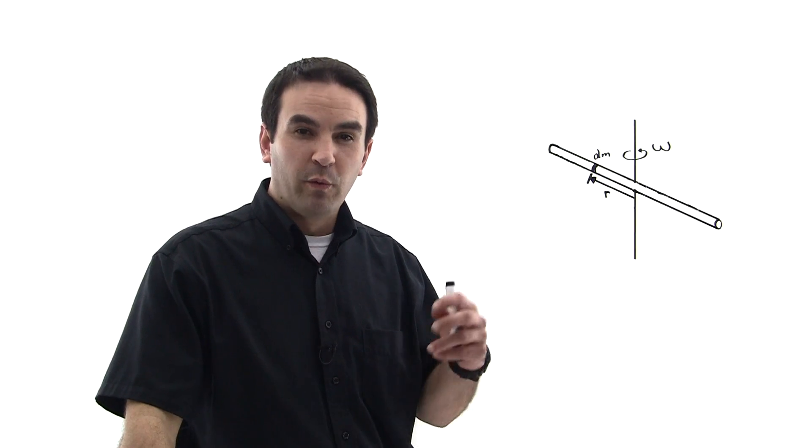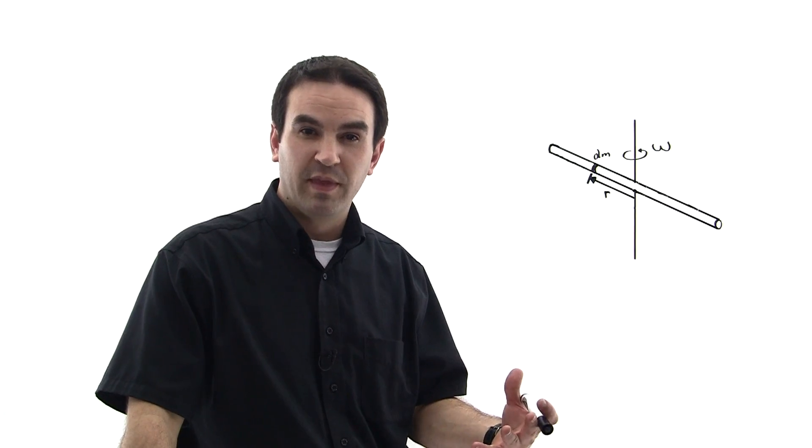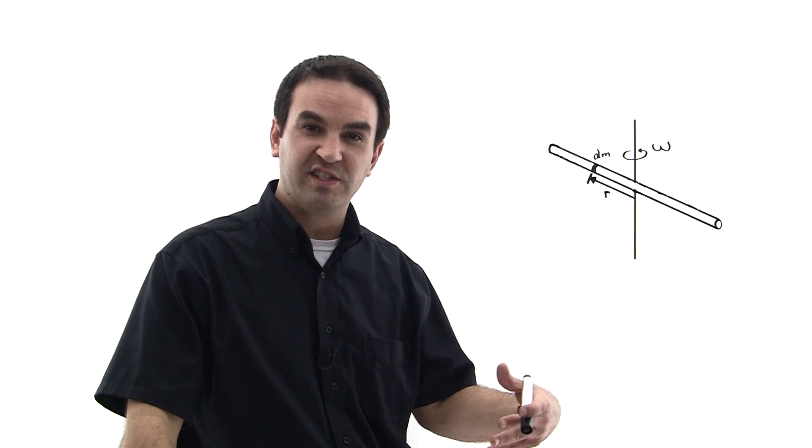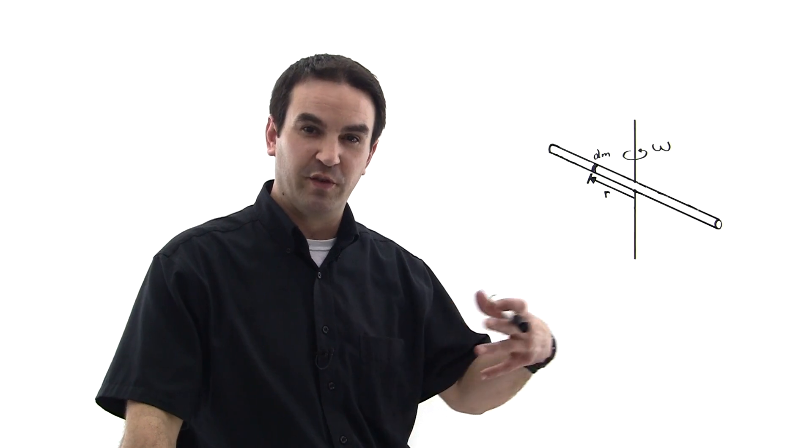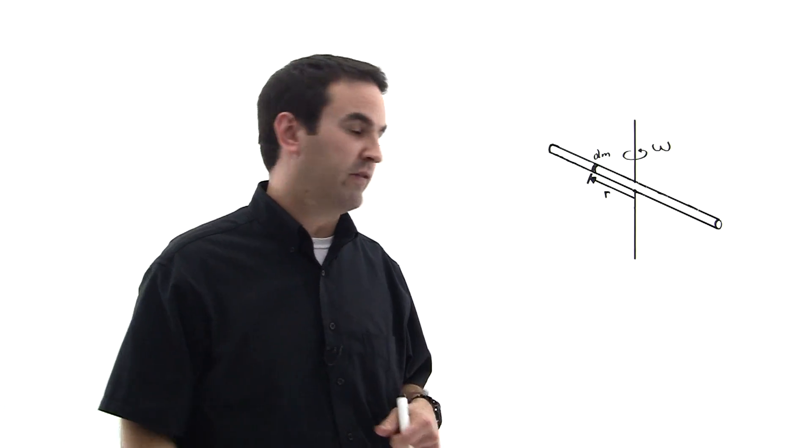Then after that, what will usually happen, typically speaking, is that you'll be given a table. And that table will have different geometries and it will have the different equations that correspond to those geometries for the moment of inertia of different situations. But let's go ahead and derive one of them.